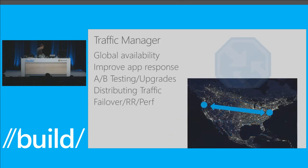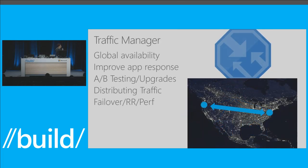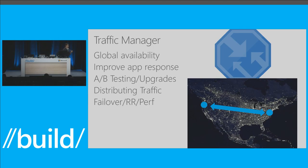We also offer Traffic Manager, which is global and DNS-based. This allows you to spread traffic across global regions — sending traffic east or west. Because it's DNS, it tries to find the best place based on proximity, and it does caching by default. It improves app response time because of proximity. It also allows you to do A/B testing and upgrades across multiple regions and distribute traffic accordingly. The combination of these things adds a lot of power for deploying HA solutions.